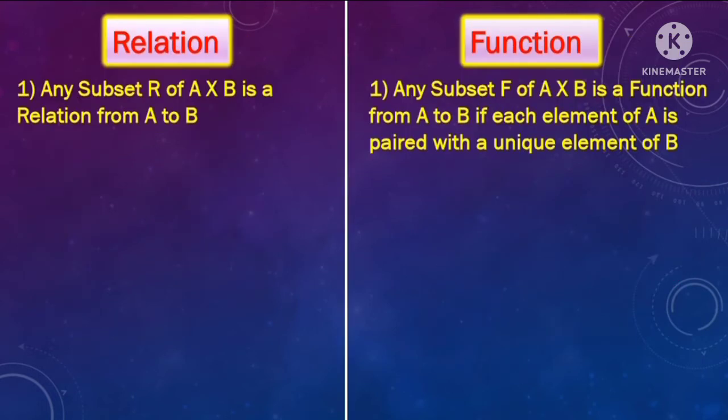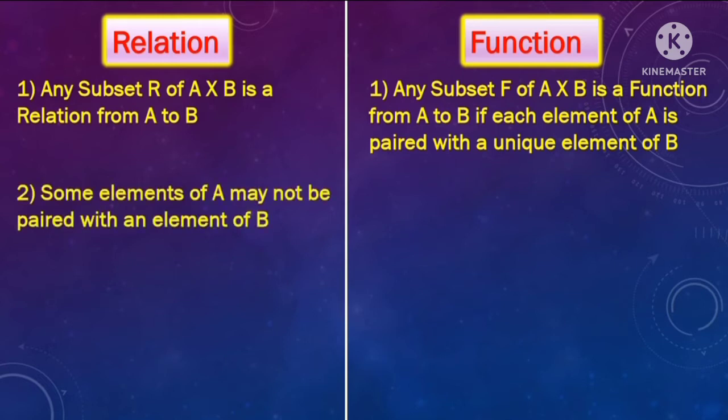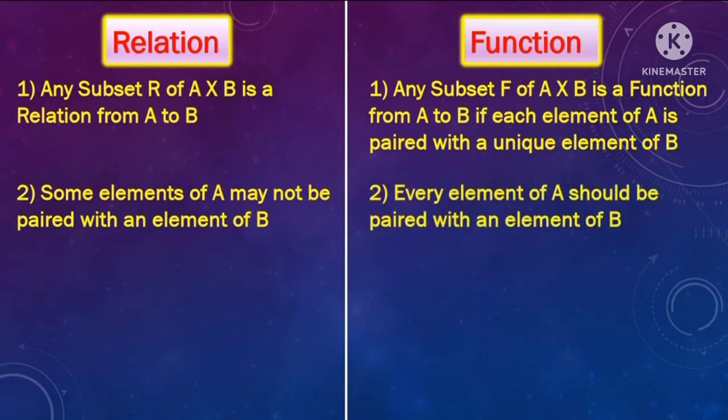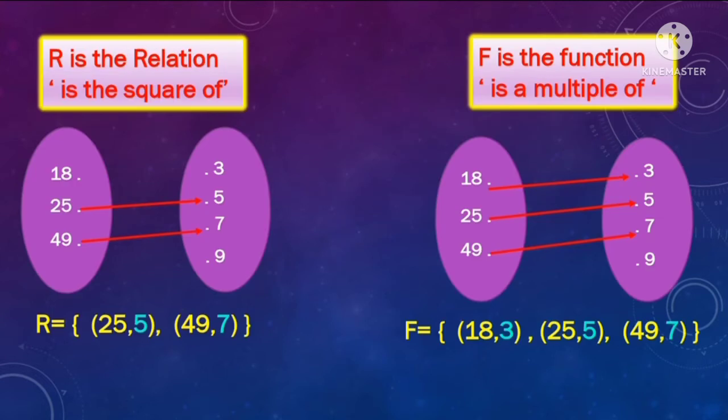Now let's come to the second difference. In a relation, some elements from the first set may not be paired at all with an element from set B. But in a function, every element of set A has to be paired with a unique element from set B. For the same example, if you see the relation R, the element 18 from set A has not been paired at all with any element from set B. Whereas in the function F, each and every element from set A has been paired with a unique element from set B. So that is another important difference between relation and function.